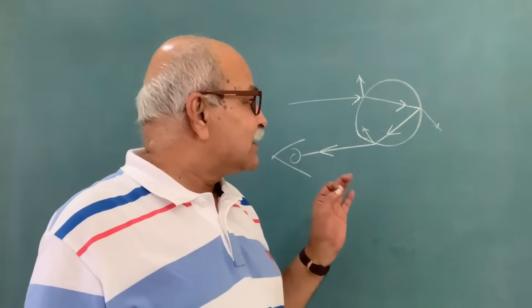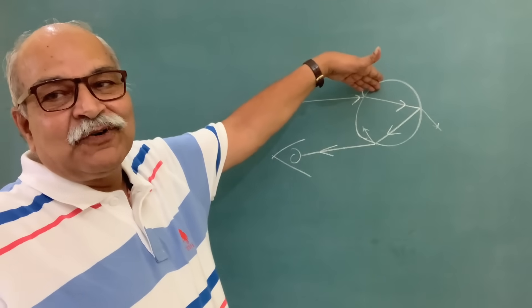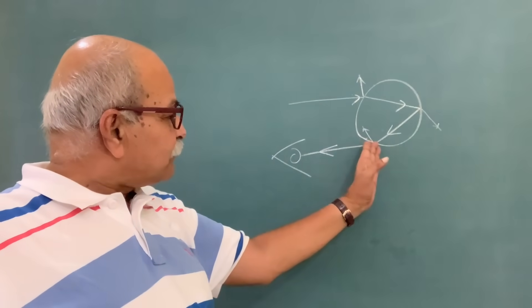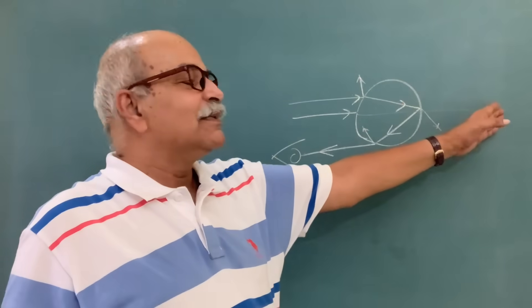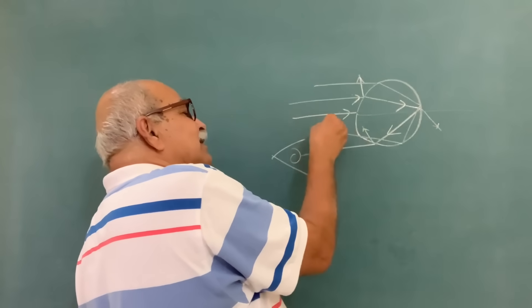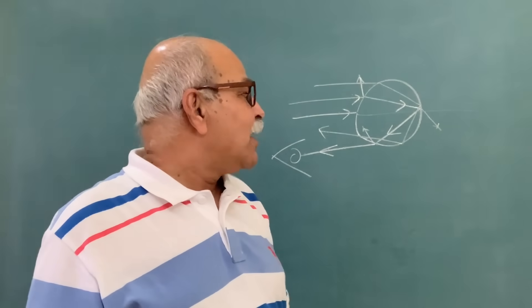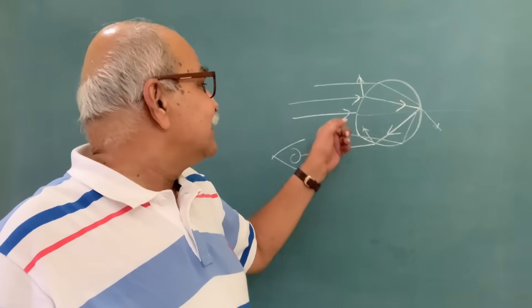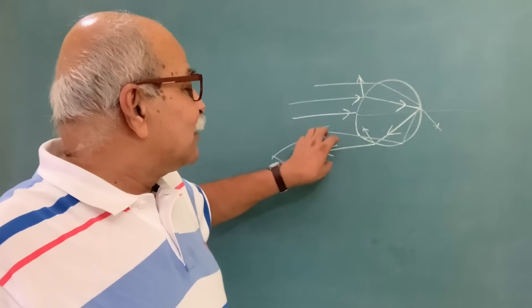Now, one extra piece of information which is generally not in the textbook: depending on where on the drop the sunlight is falling, the direction from which you receive the light will be different. If it falls at the very center, it just goes straight through — nothing different. But if it falls somewhere off-center, there will be refraction and it comes out at some other angle. And it so happens that if the angle between the finally transmitted light and the incident light is 40 to 42 degrees, then the light which comes out is most intense.